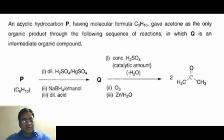An acyclic hydrocarbon P having molecular formula C6H10 gave acetone as the only organic product through the following sequence of reactions in which Q is an intermediate organic compound. This question came in 2011. There were two questions based on this write-up.